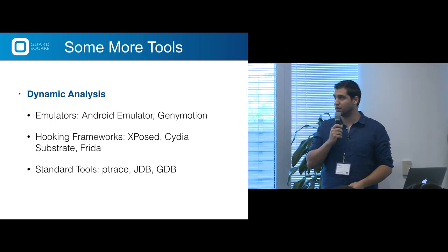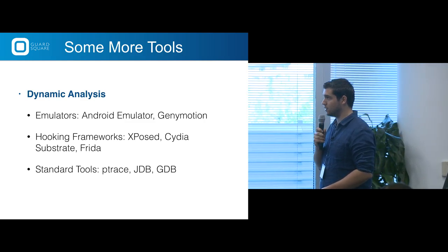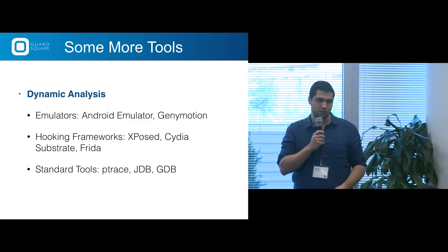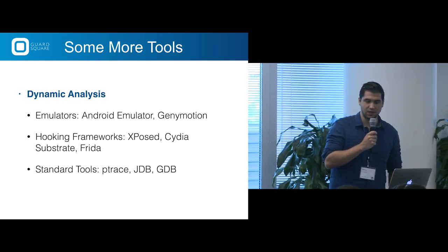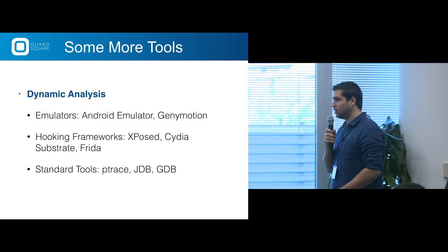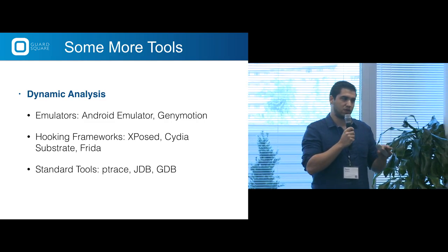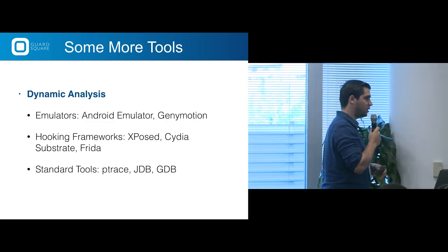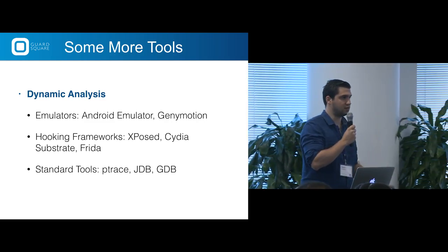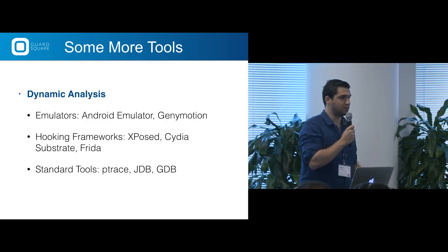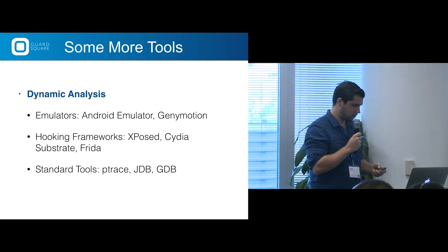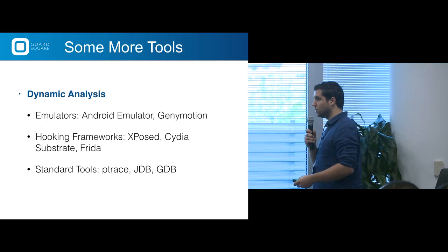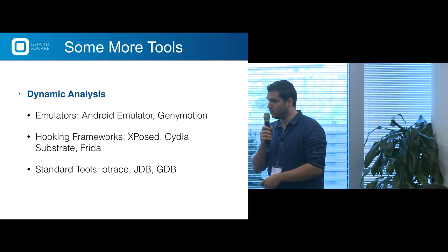Some tools for dynamic analysis: emulators like the Android standard emulator and Genymotion. Hooking frameworks: Xposed, Cydia Substrate, and Frida. These allow you to specify which methods you want to hook in an application, and they let you see the arguments passed to the method and trace the whole application. Standard tools like Ptrace, the Java Debug Bridge, and the GNU Debugger are also used.